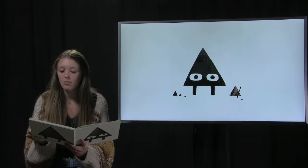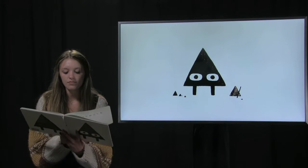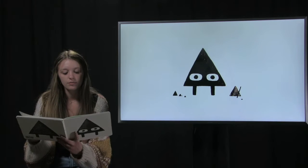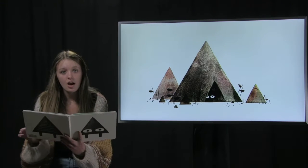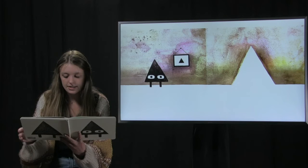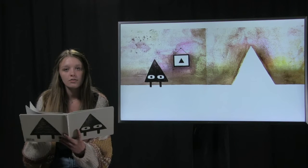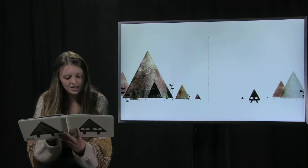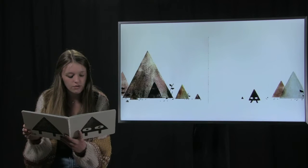This is Triangle by Mac Barnett and John Klassen. This is Triangle. This is Triangle's house. This is Triangle in his house. And that is Triangle's door. One day, Triangle walked out his door and away from his house.